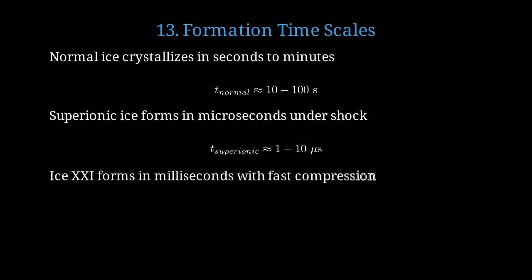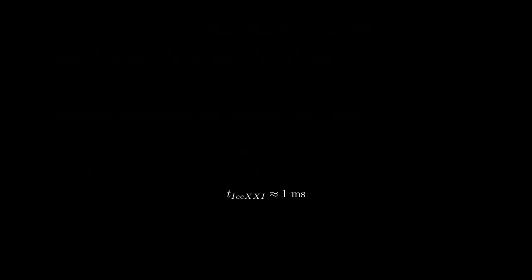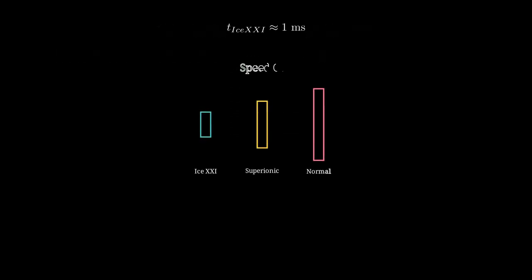Ice 21 forms in milliseconds with ultra-fast compression techniques. The formation happens in about 1 millisecond, or one-thousandth of a second. Here's a comparison showing relative formation speeds. Ice 21 forms fastest, then superionic ice, with normal ice being slowest.